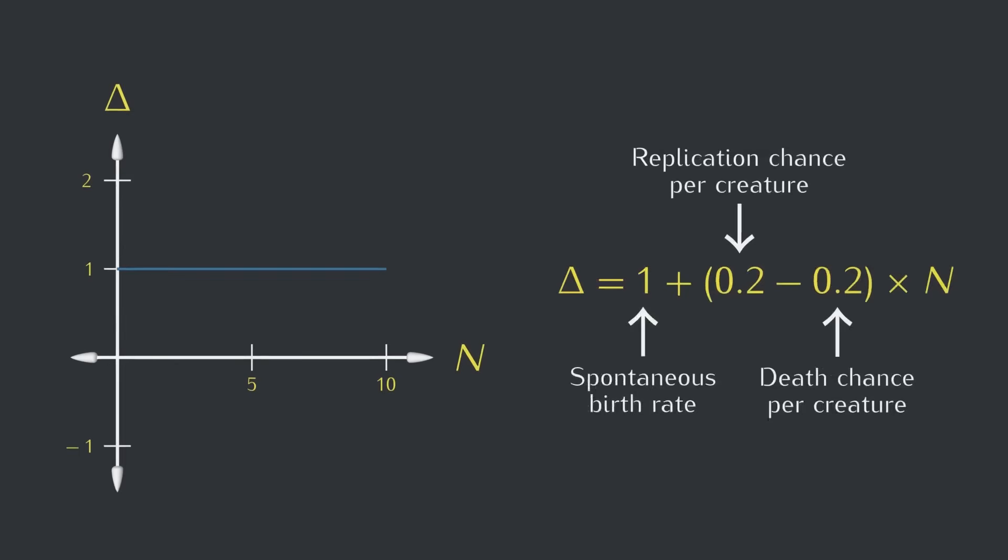Things get even more interesting when the replication chance is higher than the death chance. We get a positive slope, and this reverses that rubber band effect. When the number of creatures goes up, the expected change also goes up, causing the number to go up even more in the next time step. The two feed off of each other, going up and up and up.